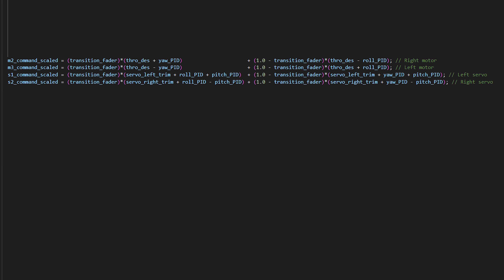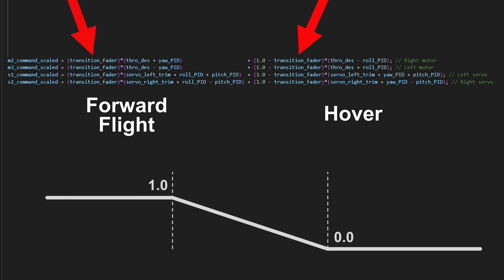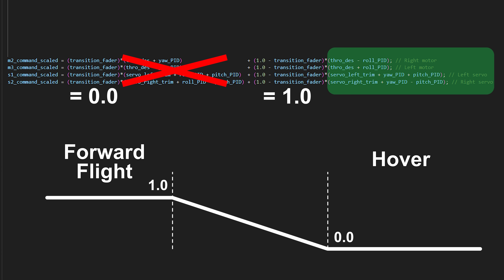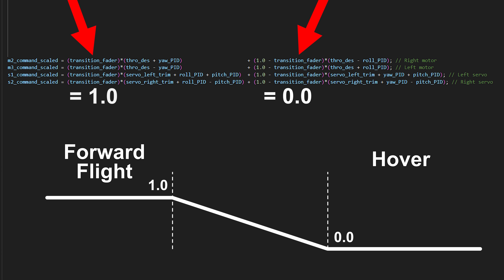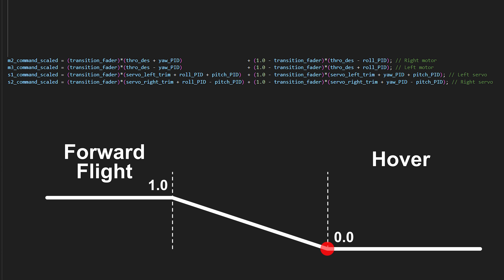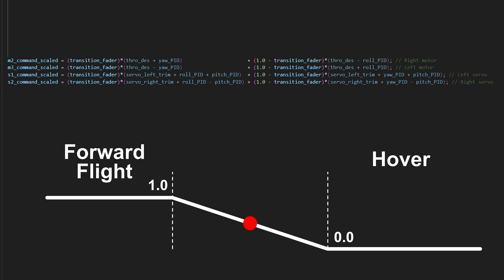We'll then use this variable to fade between the hover and forward flight mixing we configured earlier. When this variable has a value of 0, we're in hover mode and only the hover mixing side of the code results in non-zero output. When this variable has a value of 1, we're in forward flight mode and only the forward flight mixing side results in non-zero output. As the variable fades between 0 and 1, the mixed output for the motors and servos becomes a linear combination of the two distinct sets of mixing — we're just interpolating our control mixing through the transition. I did the same thing for hover and forward flight control gains, and also made the reference attitude slowly fade at the same rate.